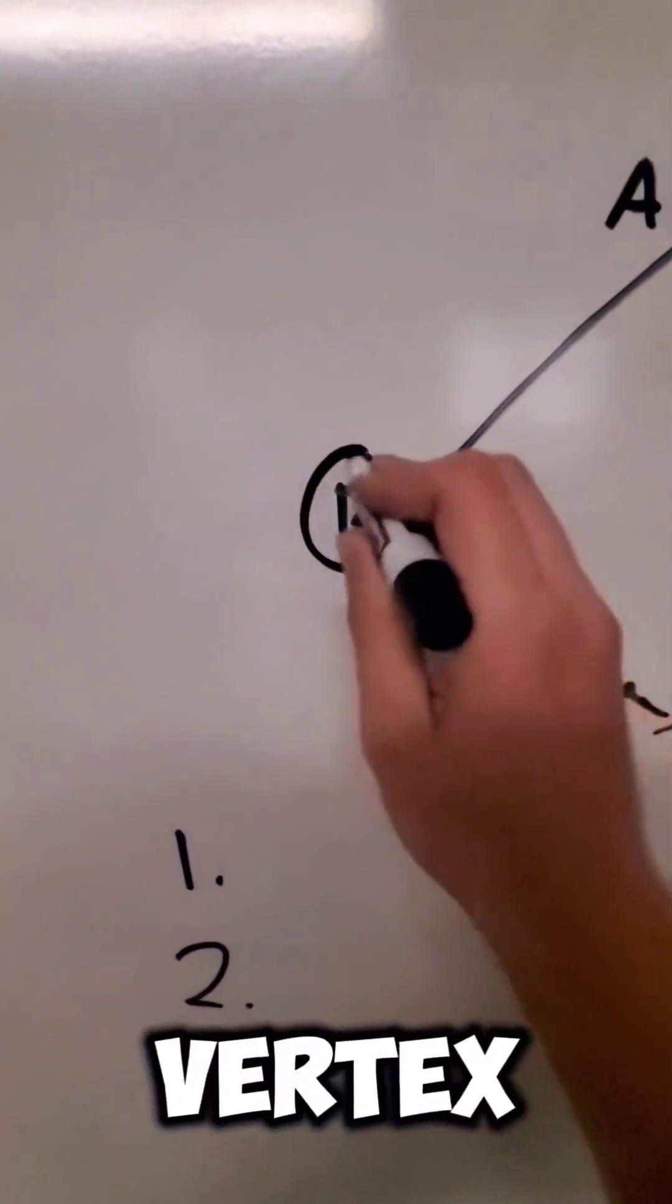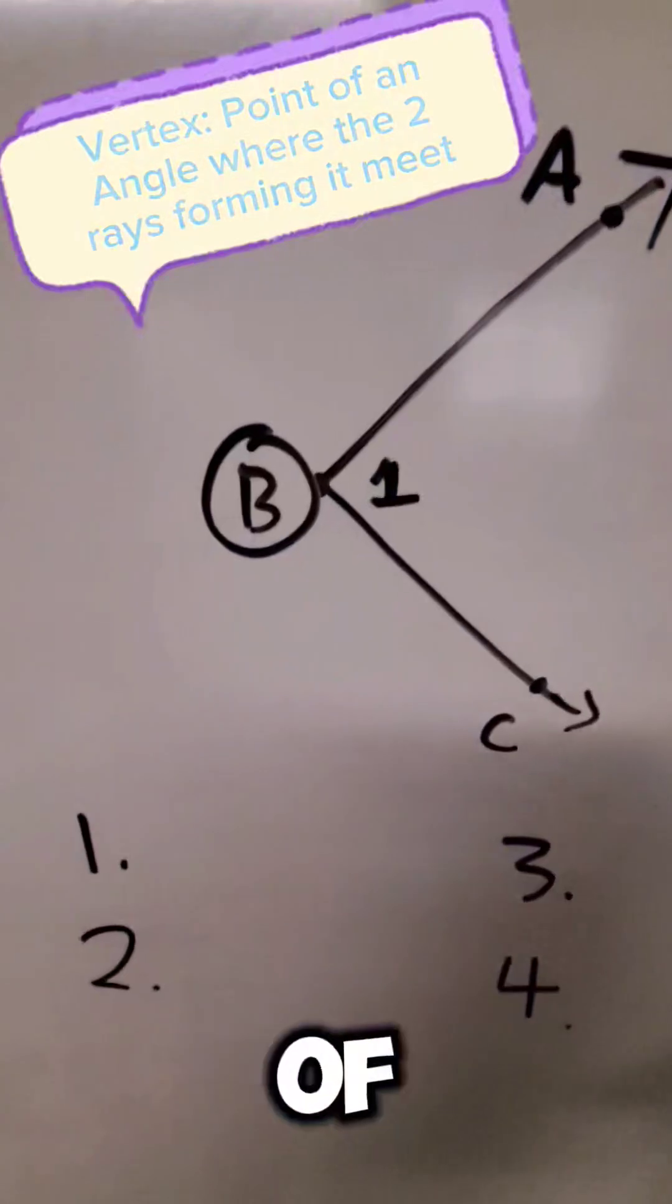This B is our vertex of our angle so it's always going to go in the middle of our three-letter name.